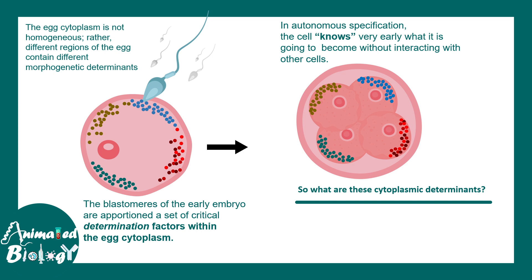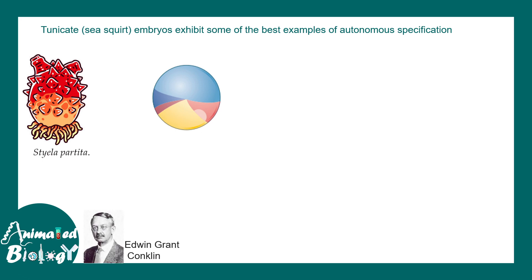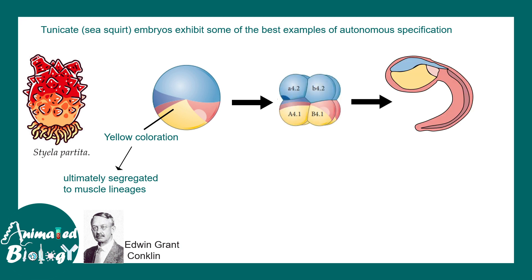Scientists were still trying to understand what the cytoplasmic determinant was — a protein, transcription factor, microRNA, long non-coding RNA? This idea came from tunicates, which are lower organisms called sea squirts. The observation was made by Edwin Grant Conklin, who found a yellow coloration in the egg cytoplasm that was ultimately observed in the tail muscles — the muscle lineage had this yellow coloration. From this, a fate map was proposed, and it was found that the B4.1 blastomere is associated with muscle lineages.